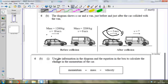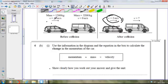The first part asks you to use the information in the diagram and the equation in the box below. So it gives you the equation you've got to use. And it asks you to calculate the change in momentum of the car. So it's pretty straightforward. We've got mass and velocity of the car before the collision. So we can work out our momentum there.